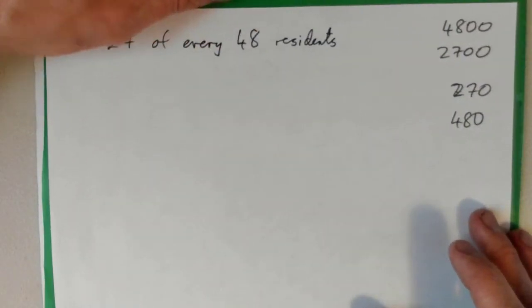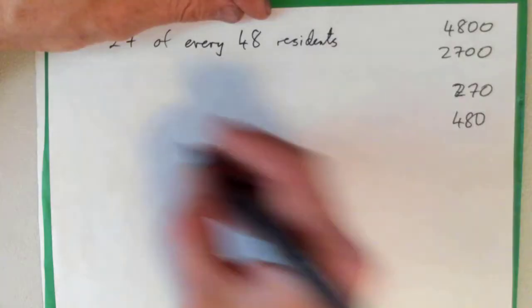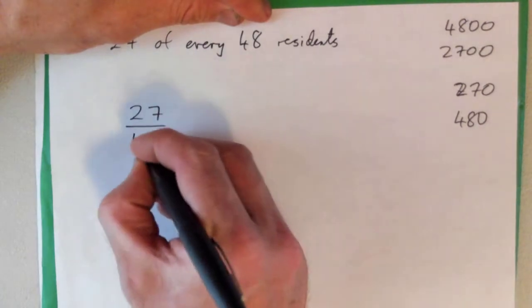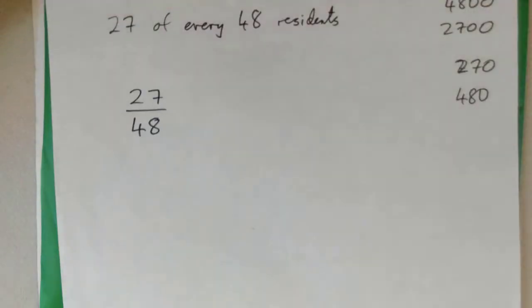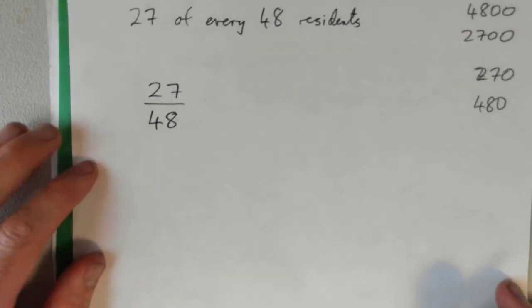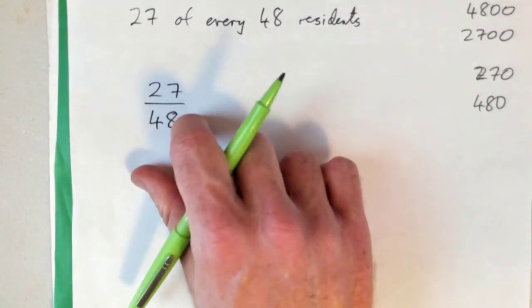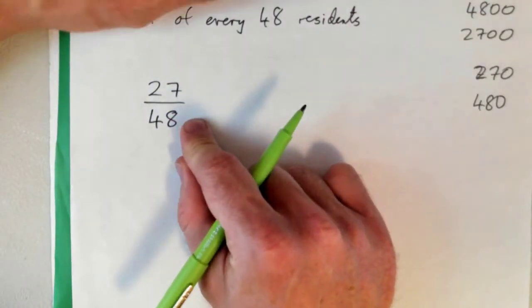In any case, what we need to do is okay, it's 27 over 48, 27 out of 48. You make this fraction and then we just simplify it, right? So you may not see that these do have a common factor, but if you don't see that, what you can do is factorize the top and bottom.